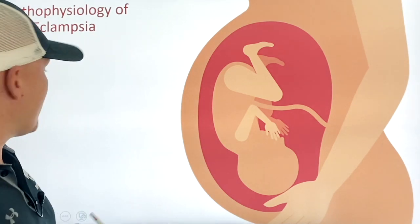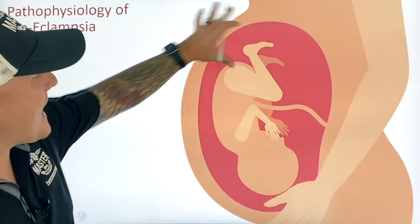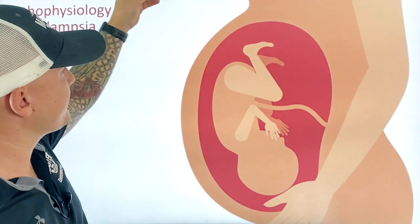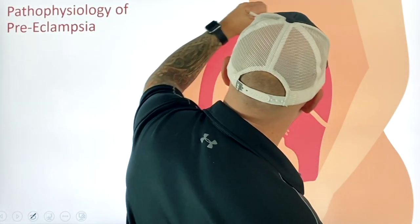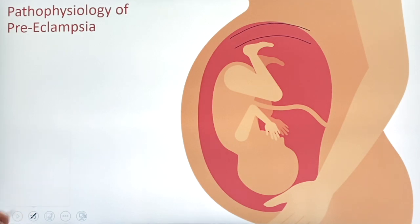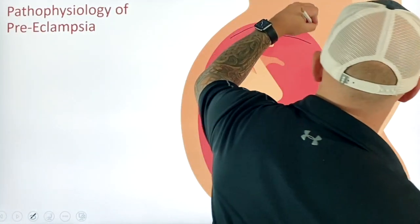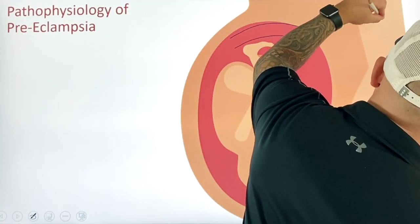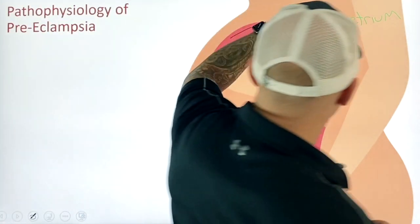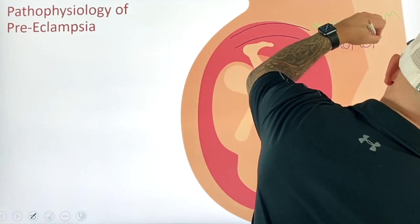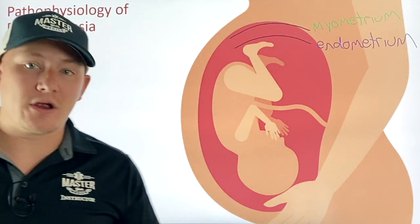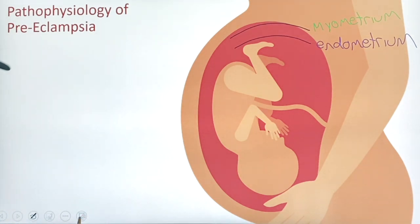Why does this occur? Let's talk about what we think is happening. We have our placenta, and a few different things in the anatomy. We need to understand there are two separate layers here: we have the myometrium, and then we also have the endometrium. Those are the two layers in order to basically create that barrier for the baby.